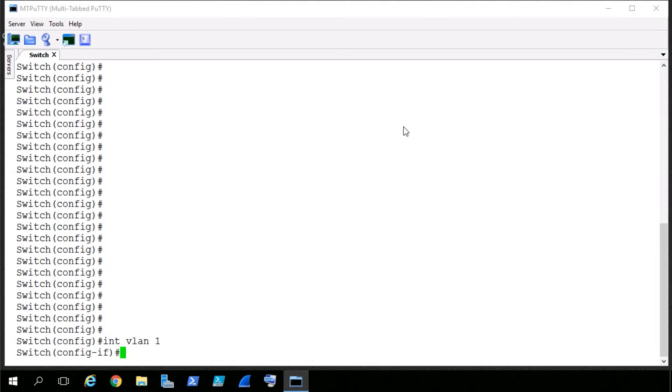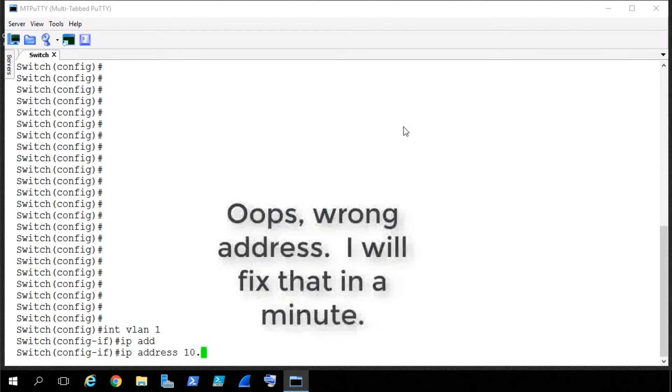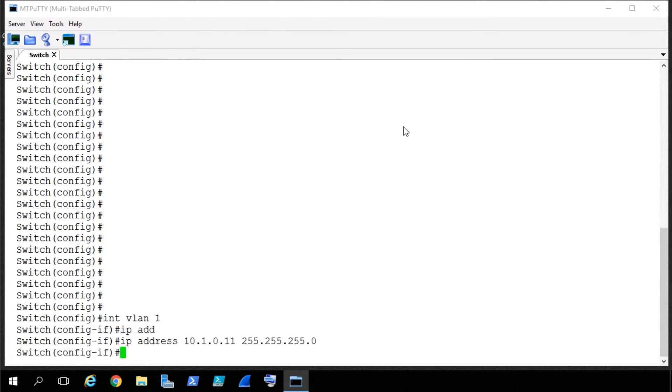And then in this logical interface VLAN1, we'll just give it the IP address that we planned on, which is 10.1.0.100. And we'll give it the mask of 255.255.255.0 and press enter. And we have a logical IP address that we can use to manage this switch.